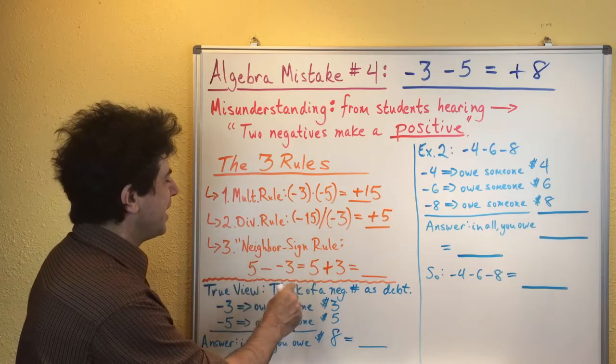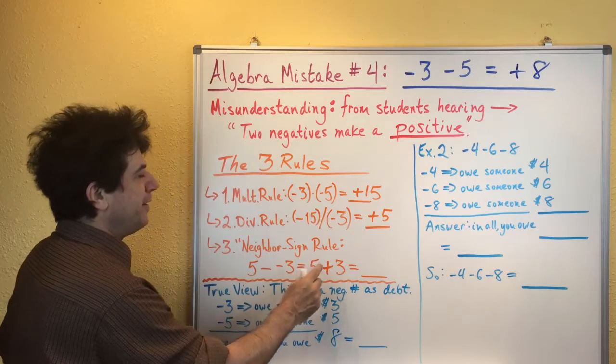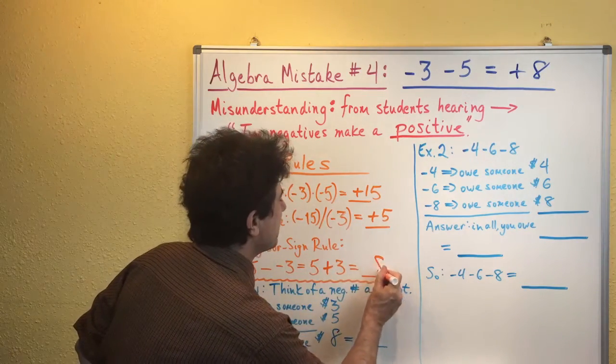I call them neighboring signs. Those two negative signs turn into one positive sign. So you wind up with five plus three, which of course is just eight.